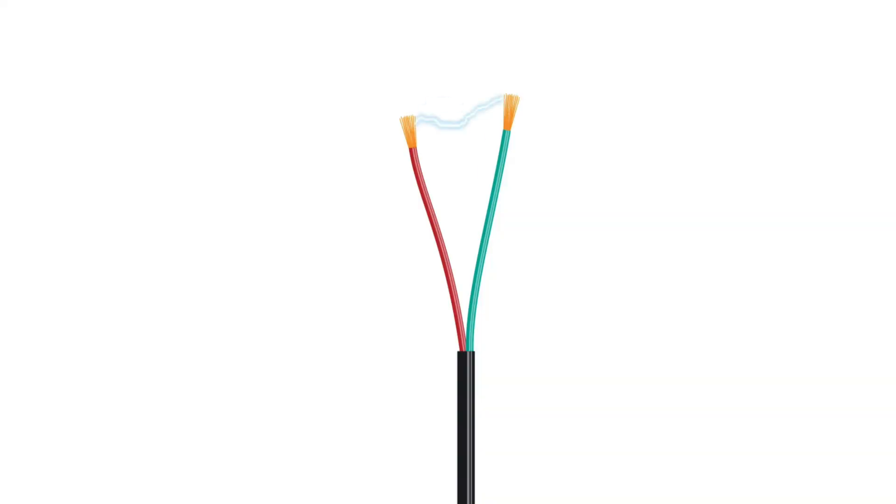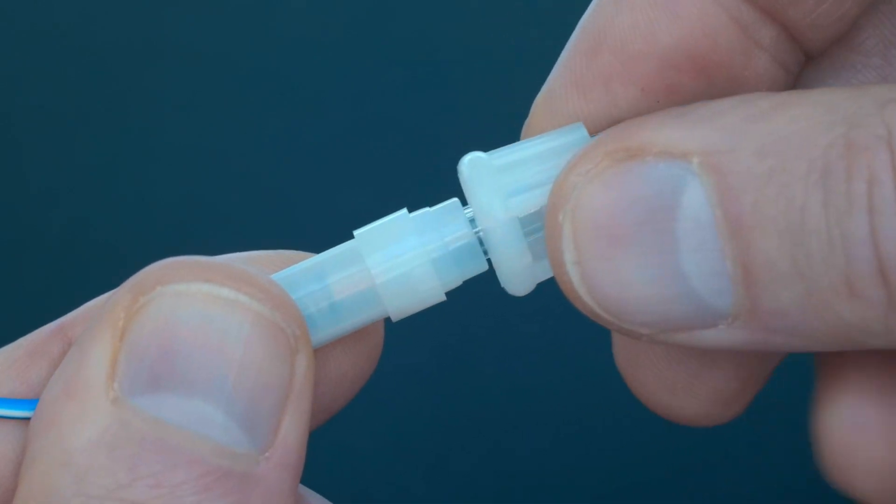Fuses are typically made of a metal wire or strip that melts when too much current flows through it, thereby interrupting the flow of electricity.